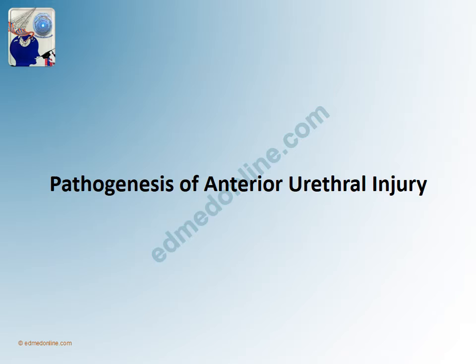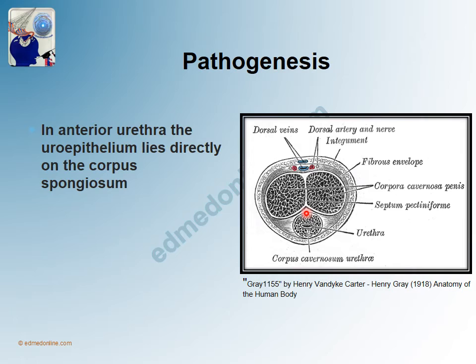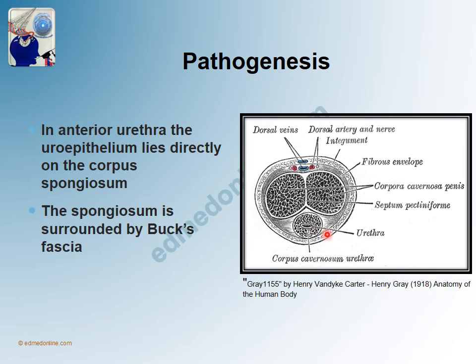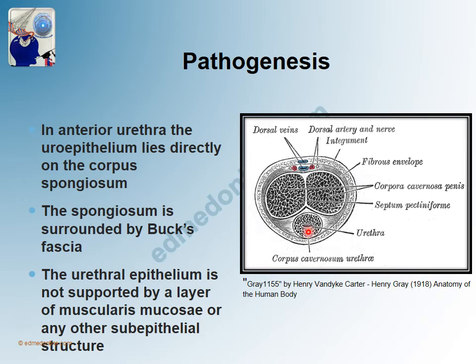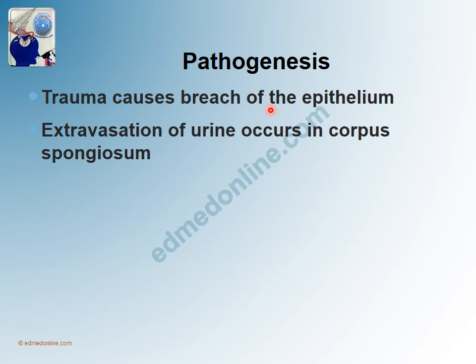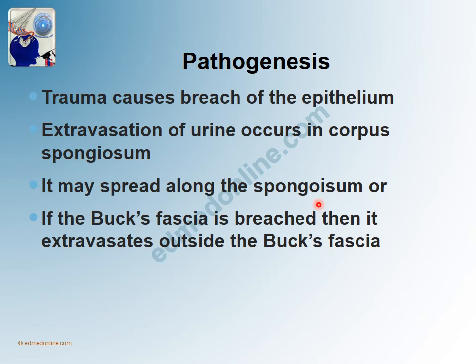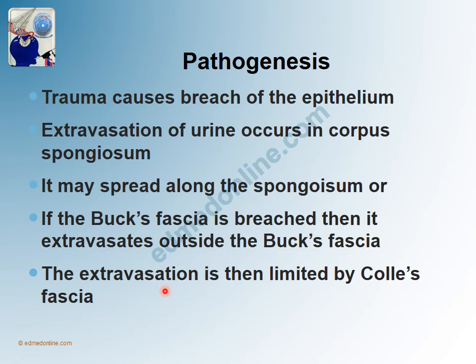Penetrating trauma would of course damage the urethra. Now for the pathogenesis of anterior urethral injury, we need to understand that the anterior urethra lies directly on the corpus spongiosum, which is surrounded by Buck's fascia. This means the urethral epithelium is not supported by a layer of muscularis mucosae or any other sub-epithelial structure. When there is trauma and breach of the urinary epithelium, extravasation of urine occurs into the corpus spongiosum. If Buck's fascia is also breached, the extravasation will occur outside Buck's fascia.